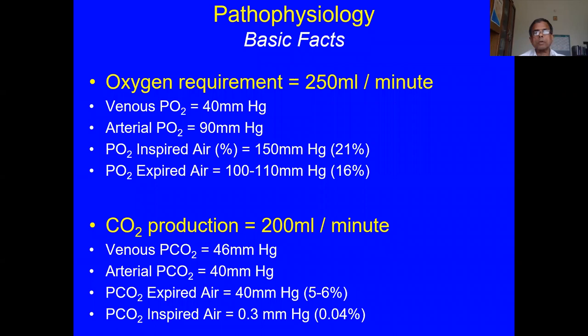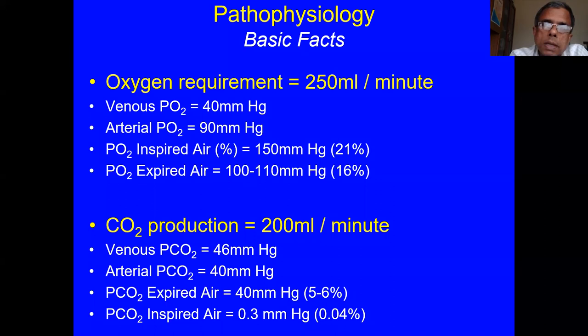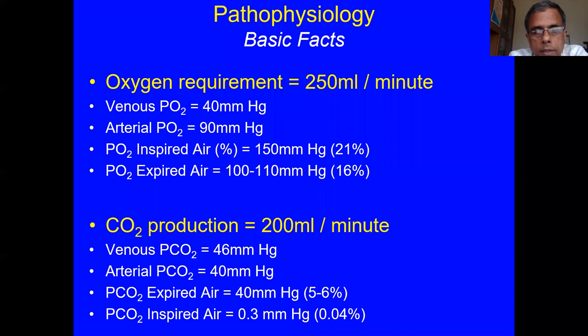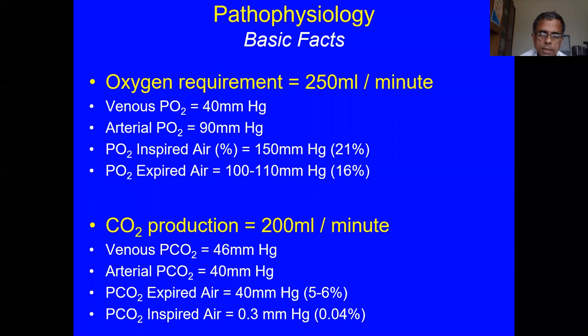Some basic facts about oxygen: the body needs 250 ml of oxygen per minute in the basal state, going up in hyperdynamic states, sepsis, or exertion. Venous PO2 is 40, arterial PO2 is 90. Inspired air has 21% oxygen, which using Dalton's Law exerts a partial pressure of 150 mmHg. Expired air has a partial pressure of oxygen of 100–110, with 16% oxygen. CO2 production is 200 ml/min in basal state; venous PCO2 is 46, arterial is 40.